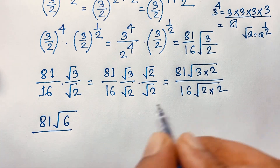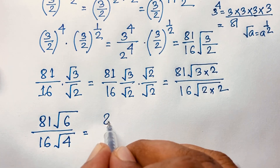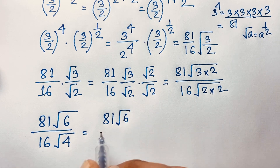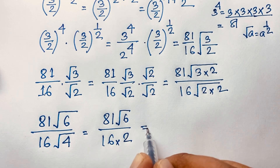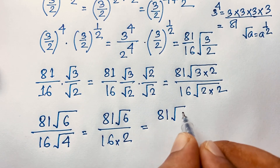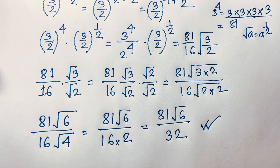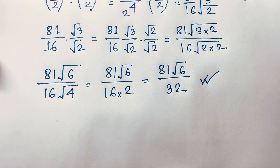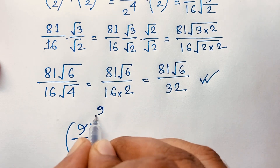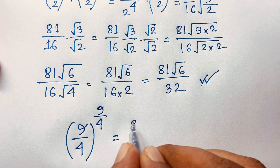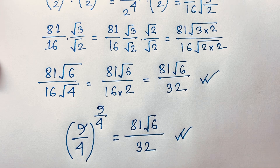So we get 81√6 over 16 times √4, and √4 equals 2, giving 81√6 over 16 times 2, which is 81√6 over 32. This is our final answer. So (9/4) whole to the power 9/4 equals 81√6 over 32.